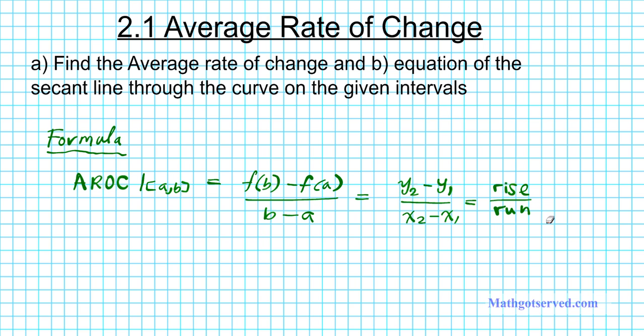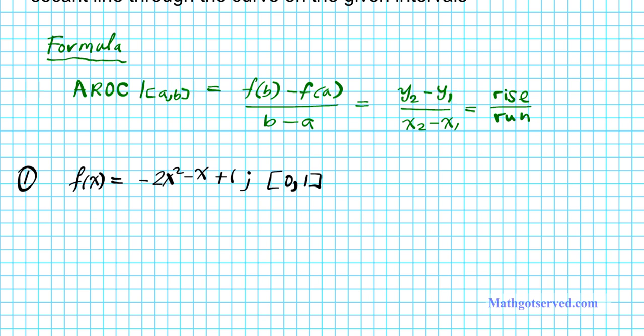So with that in mind, let's take a look at our first example. Number one, we have the function f(x) = -2x² - x + 1 on the interval [0,1]. So in order to find the average rate of change, we need four ingredients: f(b), f(a), b, and a.